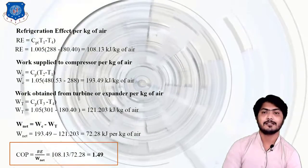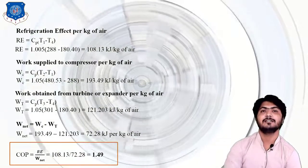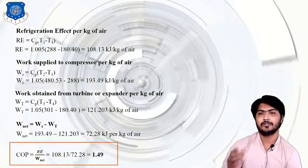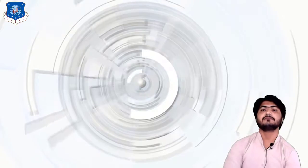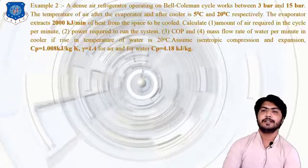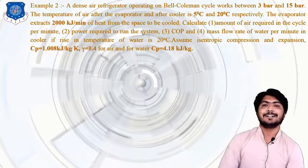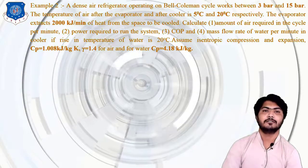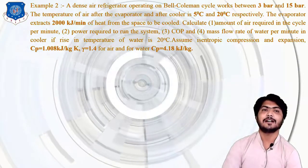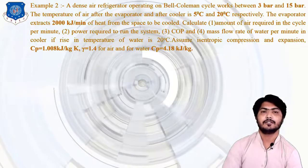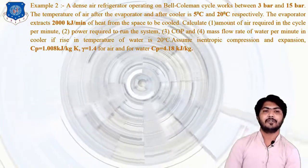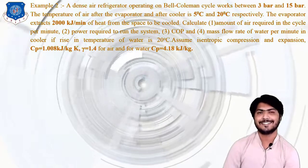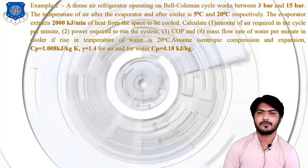If the numerical asks only for COP and carries fewer marks (like 3 or 4 marks), we can solve directly using the pressure ratio formula without going through all individual steps. Moving on to example number 2: a dense air refrigerator operating on a Bell-Coleman cycle works between 3 bar and 15 bar, giving a pressure ratio P2/P1 = 15/3 = 5.